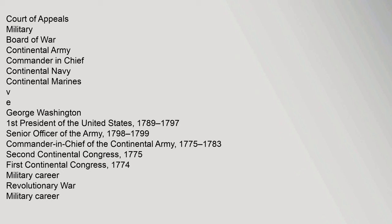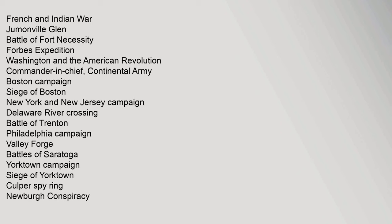The article is also linked within a George Washington navigation template, covering his roles as First President (1789–1797), Senior Officer of the Army (1798–1799), and Commander in Chief of the Continental Army (1775–1783), as well as his military career in the Revolutionary War and French and Indian War, including campaigns at Boston, New York and New Jersey, Delaware River Crossing, Valley Forge, Saratoga, and Yorktown.